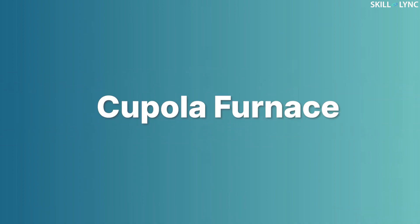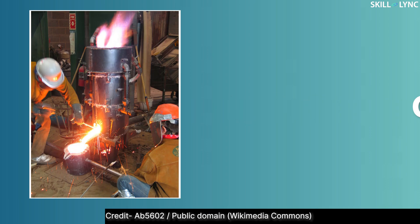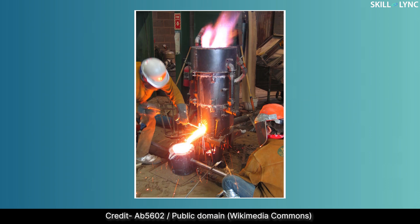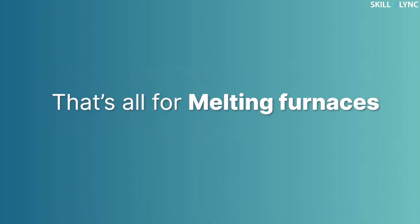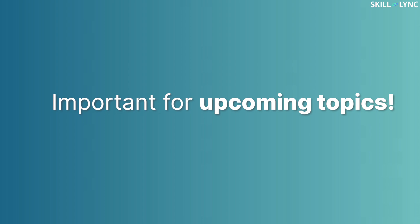There is one more melting furnace called the cupola furnace. These furnaces were used in foundries, but in recent times electric arc furnaces are preferred over cupola furnaces due to the higher investments required for cupolas. However, cupola furnaces operate continuously, have high melting rates, and manufacture large quantities of molten metal.